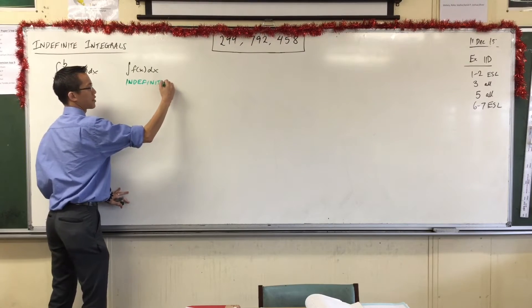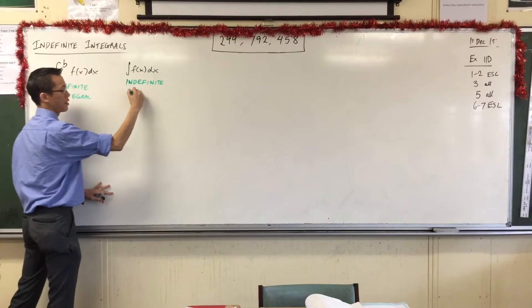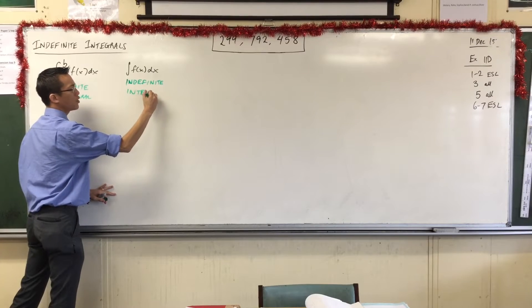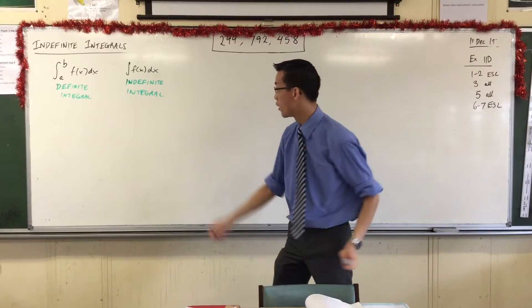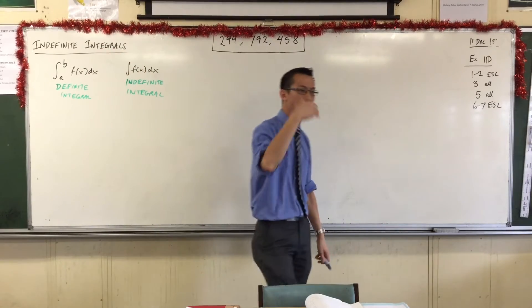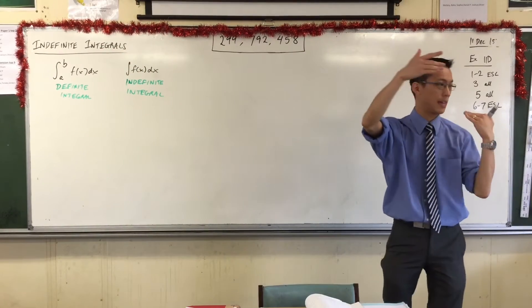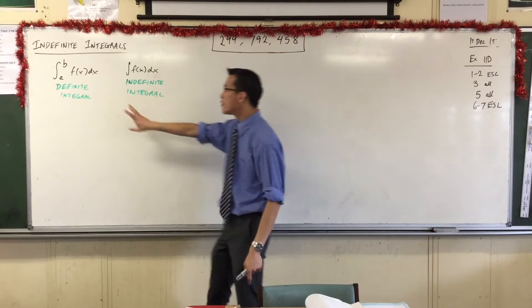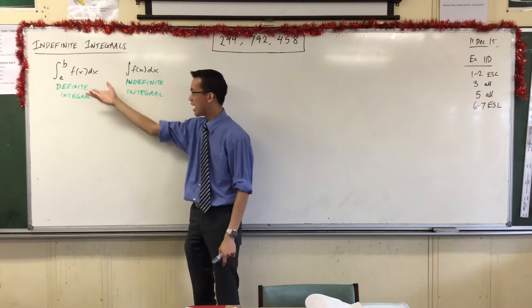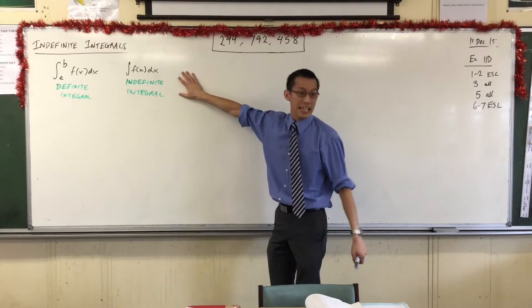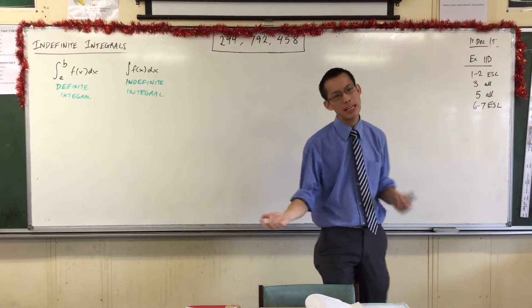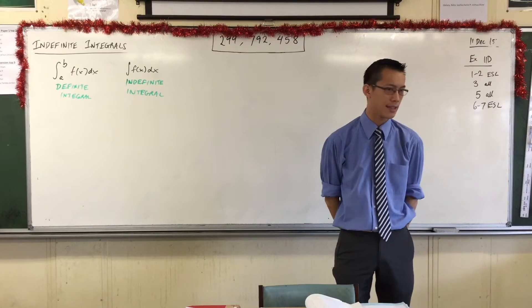Now, if you recall, coming back to definite integrals, what you do is it's connected to the primitive function. You find the primitive of f, then you evaluate it at b, and you take it away from evaluating it at a. So finding the primitive is kind of what is like the engine that makes this work.